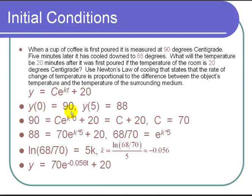y of zero is 90. When t is zero, y is 90. And then we also know that after five minutes, it was 88 degrees. Five minutes later, it cooled down to 88 degrees. So y of five equals 88.